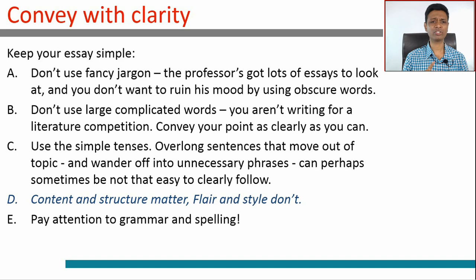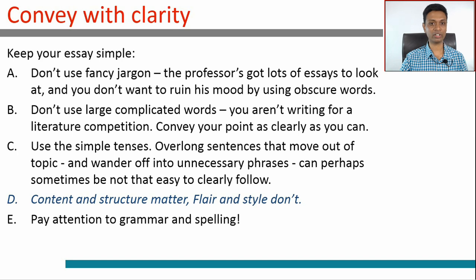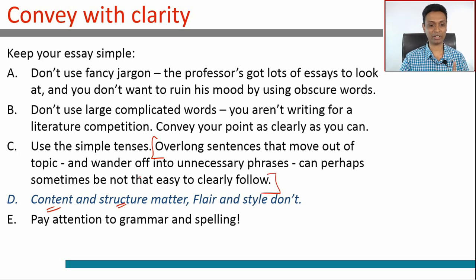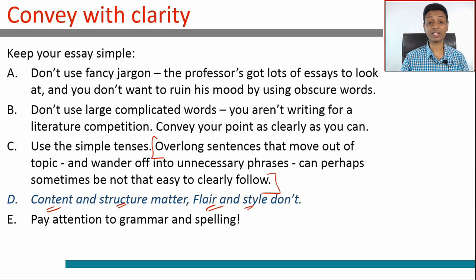Come with clarity — this is very vital. Keep your sentences simple. Keep your sentences in the simple tense. Don't use a lot of jargon, don't use long complicated words. Don't try to impress people with your vocabulary and with your ability to write long sentences. Both are wrong ideas to take into an essay writing exercise. Overlong sentences that wander off into unnecessary phrases can be hard to follow. Write simple English. Content and structure matter — what you're saying, how clearly you're saying it, in what sequence you're saying it. Flair and style do not. This is an essay writing exercise for people who aspire to be an MBA, not for a literature class. They don't want to know how good your English is — they want to know how clearly you can think. It's an exercise in articulation and clarity, not in flair.